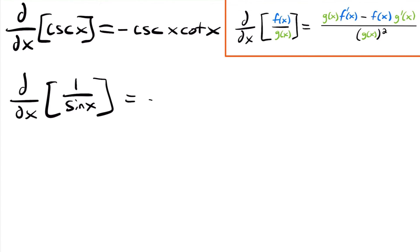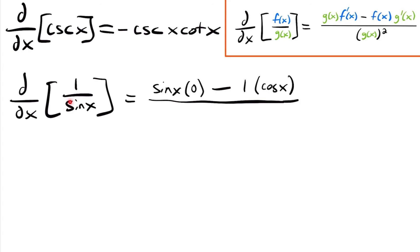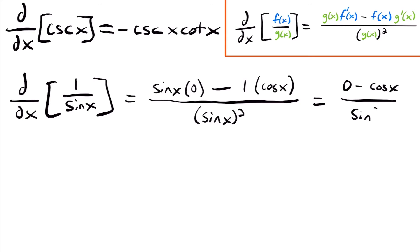We have 1 in the numerator and sine in the denominator. So this equals the denominator sine x times the derivative of the top, which is 0 since 1 is a constant, minus the numerator 1 times the derivative of sine x, which is cosine x. All divided by the denominator squared, sine squared x. Simplifying: 0 minus cosine x divided by sine squared x, which gives us negative cosine x divided by sine squared x.